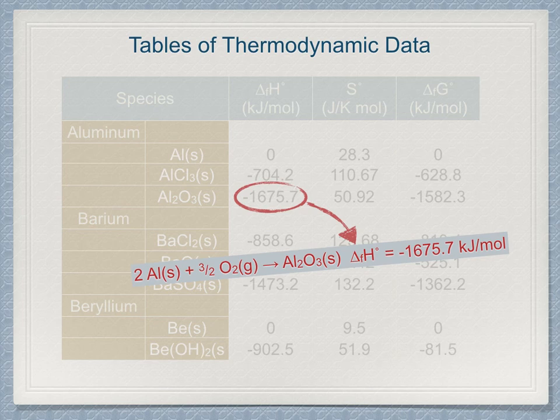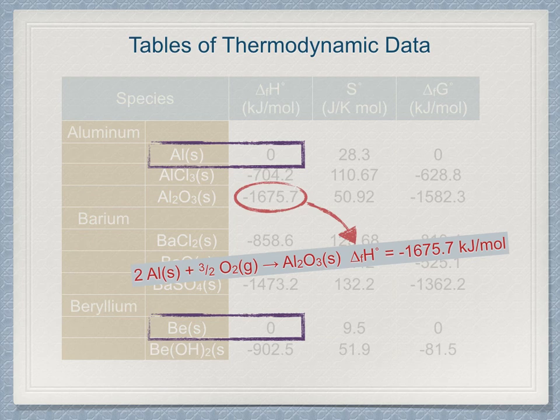A table of enthalpy of formation data reports data on the assumption that in the formation reaction, the substance of interest has the stoichiometric coefficient of 1. An important point to remember that should be obvious is that the enthalpy of formation of the elements in their standard states is 0 kilojoules per mole. This should be obvious because the formation reaction in such a case would be the element reacting to become itself.